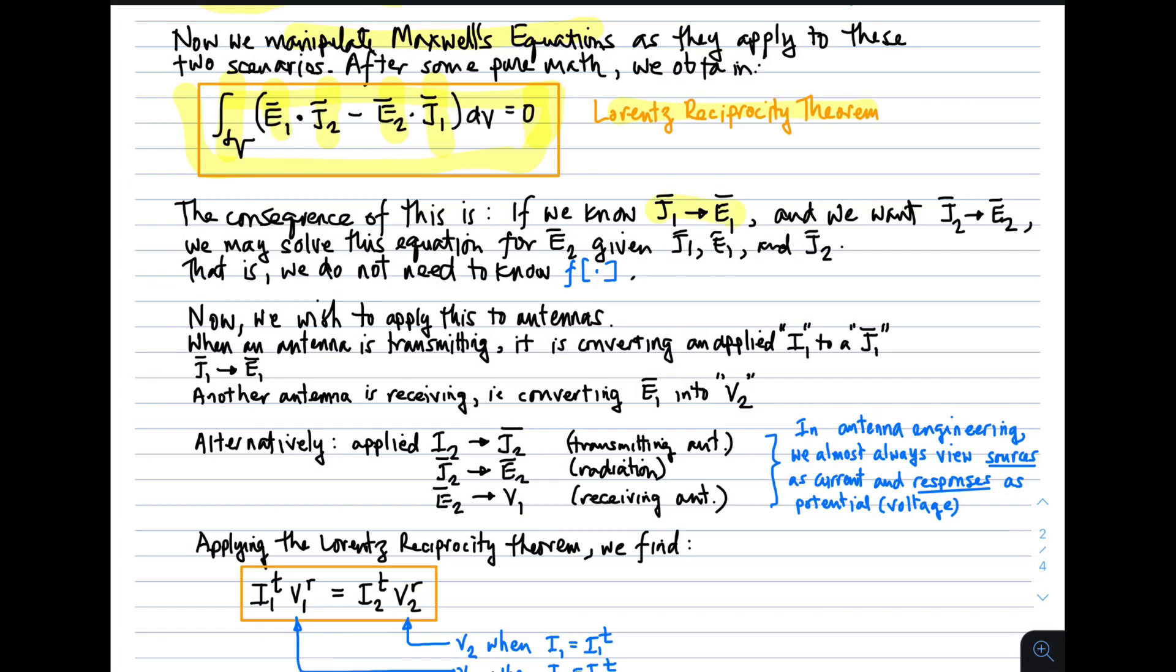In other words, if we know E1 given J1, and we want E2 given J2, we could, in principle, solve this equation for E2. It's an integral equation. In principle, we could solve it. And so we can find E2 given J1, E1, the results of the first experiment, J2, the source in this case. And we could obtain E2, the result in the second case, without knowing anything about the system, without knowing how materials are arranged in the system, without knowing anything else about how the system works. In fact, not even having to apply Maxwell's equations, because those are built in to the Lorentz reciprocity theorem.